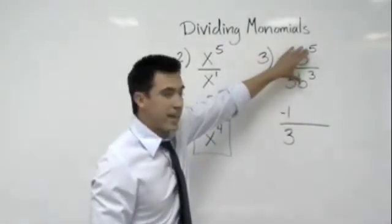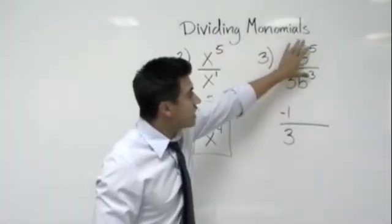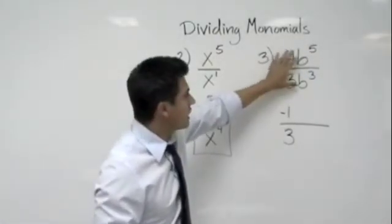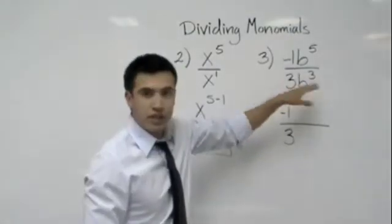And all we have to do now is go ahead and divide the exponents, right? So we just look at the variable here, b to the fifth power over b to the third and we divide it.